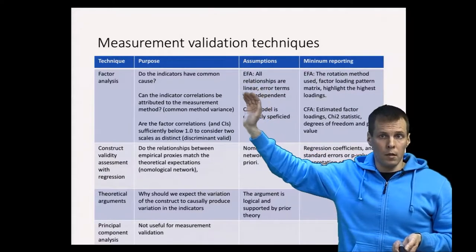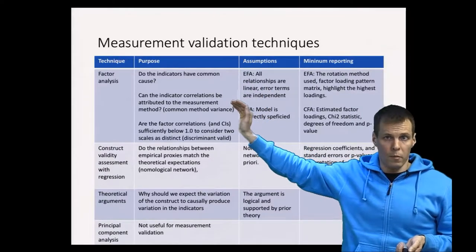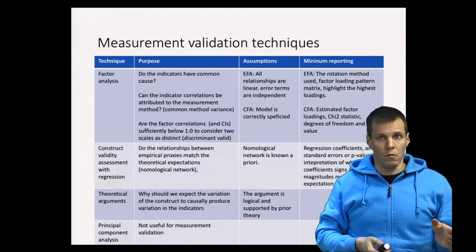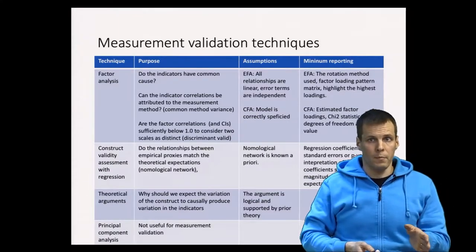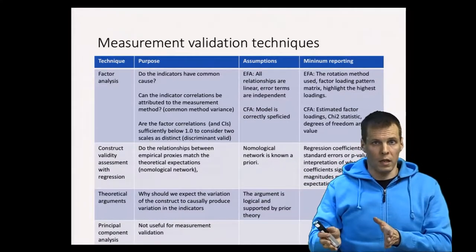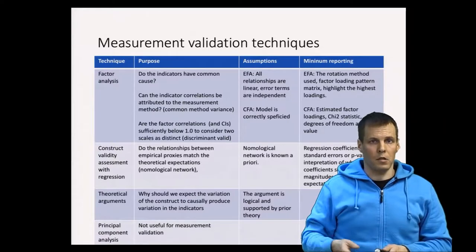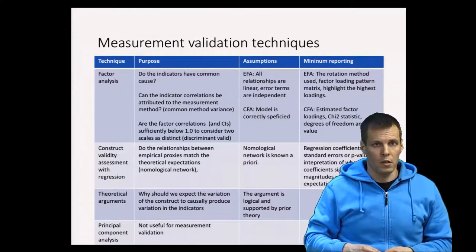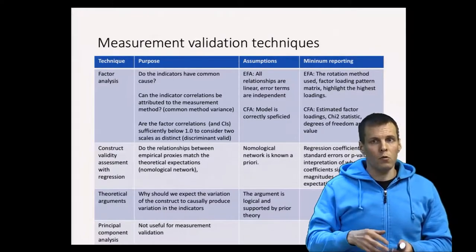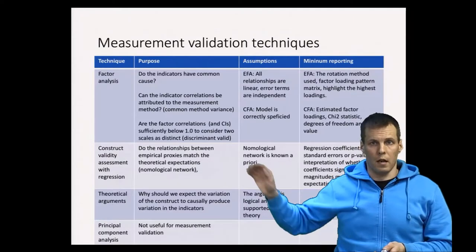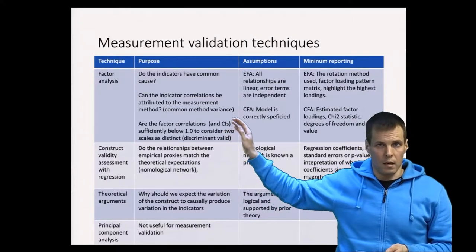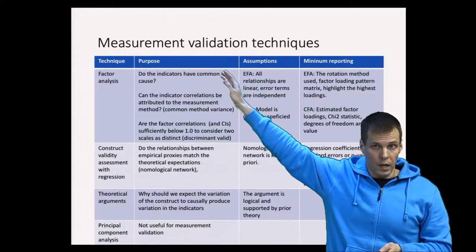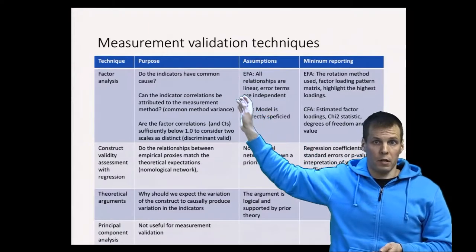The second purpose is to assess common method variance. If one factor explains the majority of the correlations in the data, then that is an indication that your measurement method could be driving the correlations. There are also more refined techniques that allow you to test method variance and the actual factors at the same time.